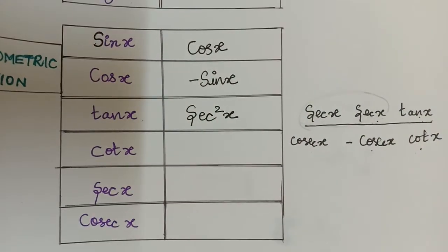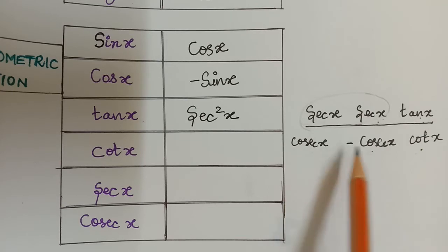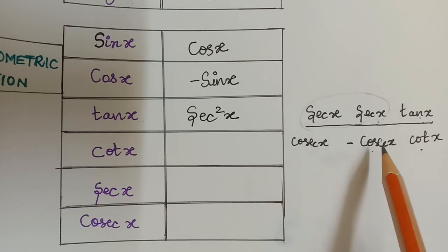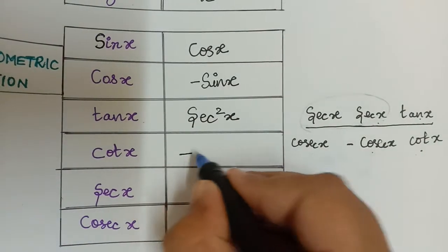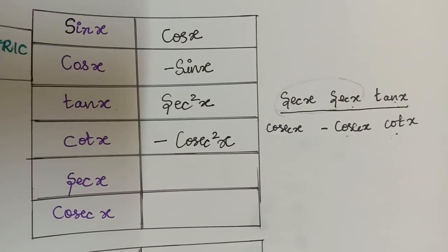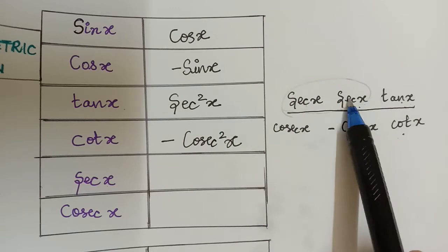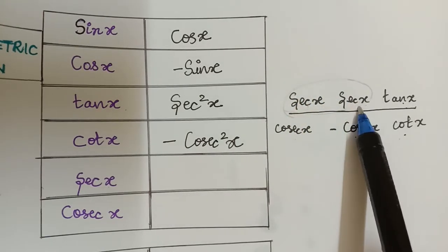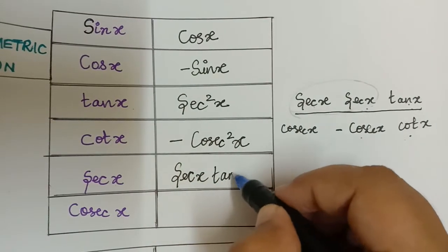Now the differentiation of cot x: locate cot x in the row. Leaving cot x, the other two terms are cosec x and minus cosec x. Multiplying these gives minus cosec²x. So the differentiation of cot x is minus cosec²x. Next, the differentiation of sec x: leaving sec x, multiply the other two terms of that row to get sec x·tan x.